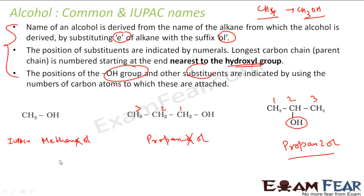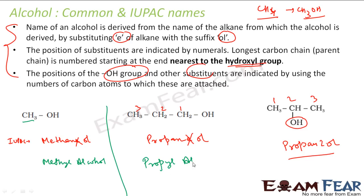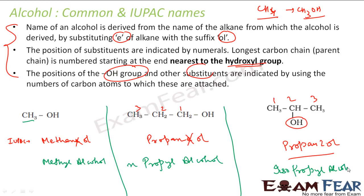Let's see the common name. For common names there is no naming convention as such. This is from methane, so it is methyl alcohol. This is from propane, so it is propyl alcohol. The straight chain one is N-propyl alcohol. This is also propyl alcohol, but since the middle carbon has the OH, it is a branch — so it is isopropyl alcohol. As discussed, there is no fixed rule for common names, and that is why we came up with IUPAC names.